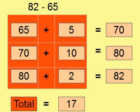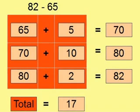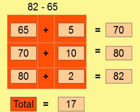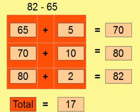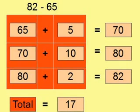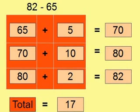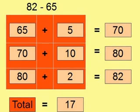If we now add up the 5, the 10, and the 2, we get 17, which is the difference between 65 and 82. We've now seen three methods for subtraction.